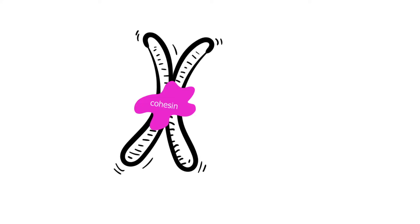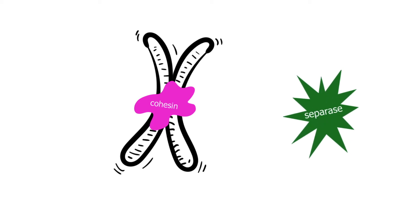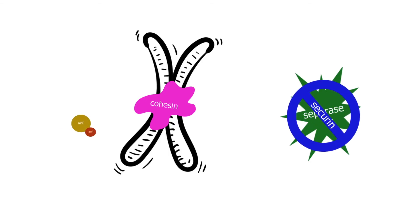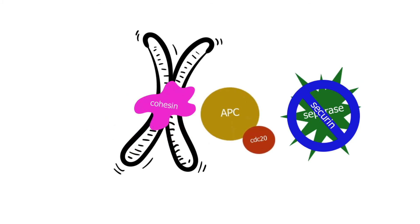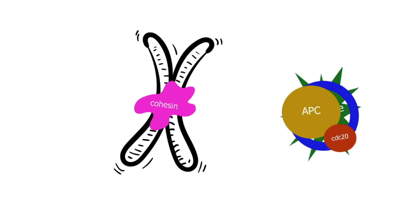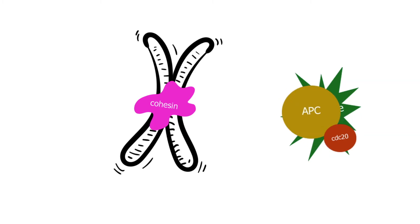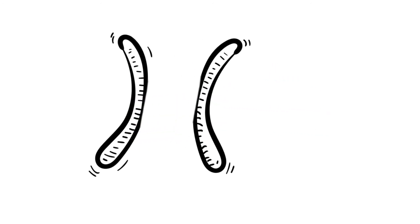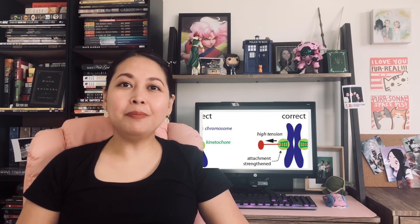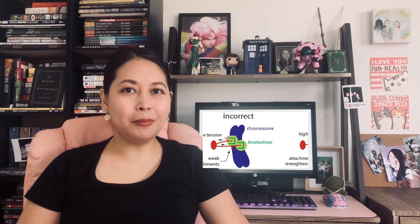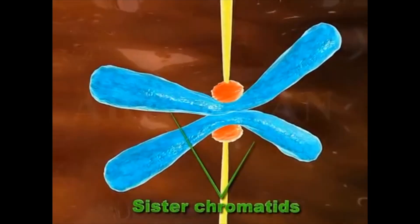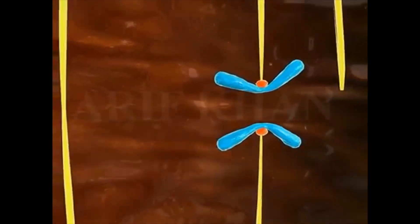During metaphase, a molecule called cohesin keeps the two sister chromatids together. Only the enzyme separase can destroy cohesin, but separase is inhibited by securin. During the mitotic phase, the anaphase-promoting complex is activated and binds with CDC20, allowing them to inhibit securin and thus releasing separase to destroy cohesin. Another important aspect of this checkpoint is that the microtubules attached to the chromosomes should be pulling from opposite ends — they cannot be attached on the same side, or the sister chromatids will not be pulled apart.